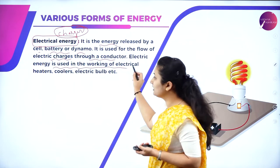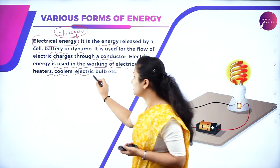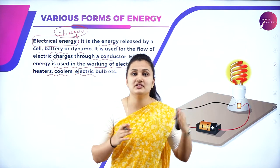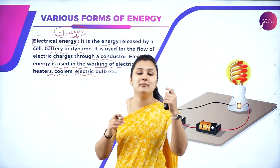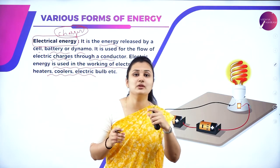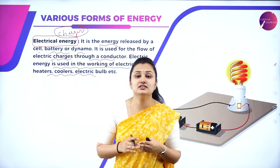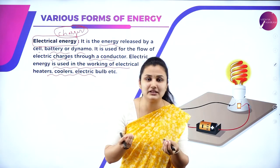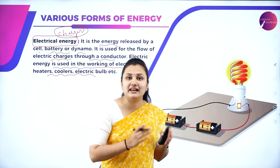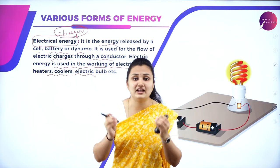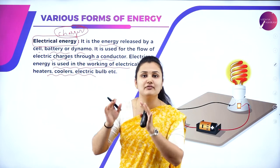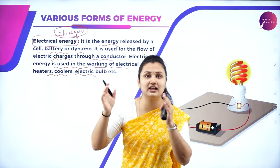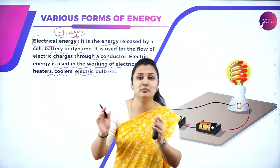Electrical energy is released by a cell, battery, or dynamo, and is used for the flow of electric charges through a conductor. It is used in the working of electric heaters, coolers, electric fans, bulbs, etc. We get electricity from the power station through large cables to our homes. At the end of the month, we pay an electric bill for the electrical energy we have consumed. If you want to save on your bill, don't forget to turn off lights or fans when not in use.